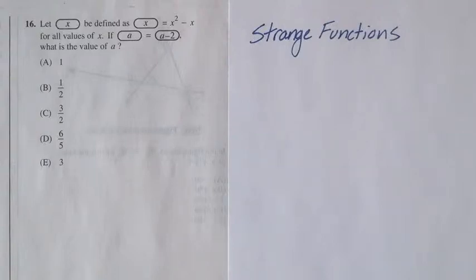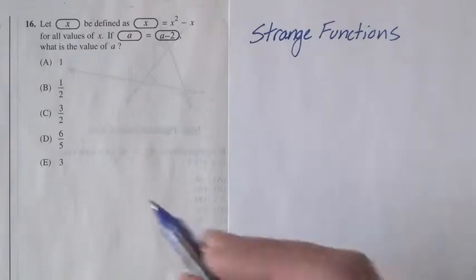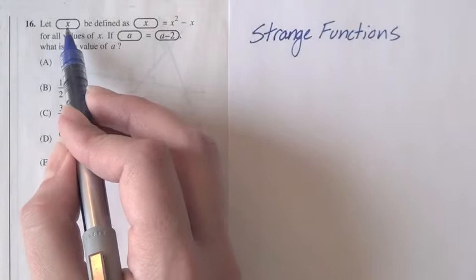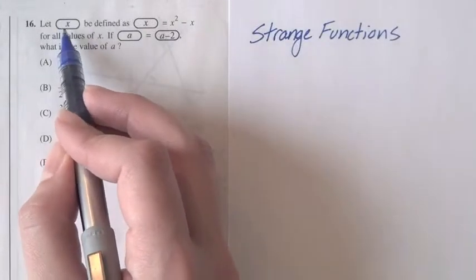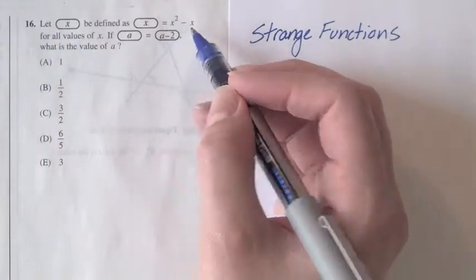Question 16 reads: let x oval be defined as x squared minus x for all values of x. If a oval equals a minus 2 oval, what is the value of a? This is a strange functions question because it introduces a non-standard operation. A value inside an oval will be defined as x squared minus x.